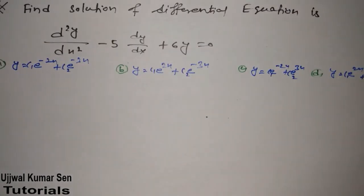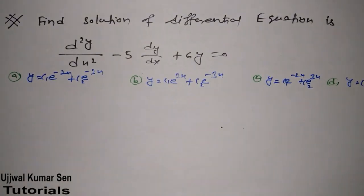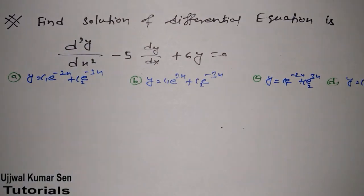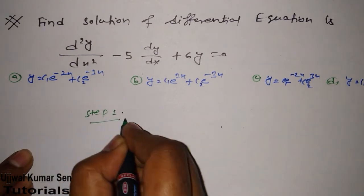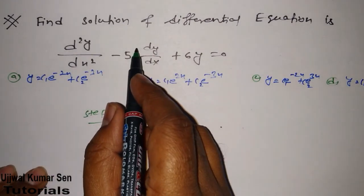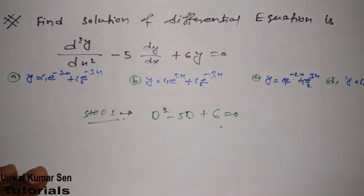The first question was already asked in GATE previous year. The question asks us to find the solution of a given differential equation. Whenever you see nth order — that is, an order greater than one — that is known as nth order. The first step is to read the question, and the next step is to convert it into an auxiliary equation: d² minus 5d plus 6 equals 0.